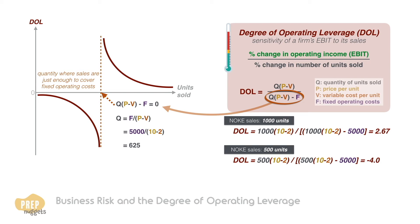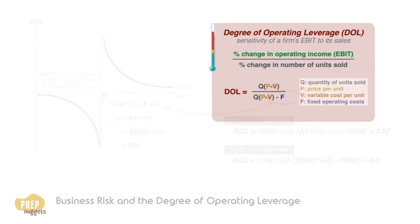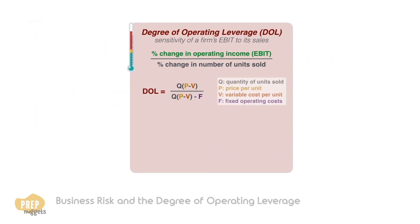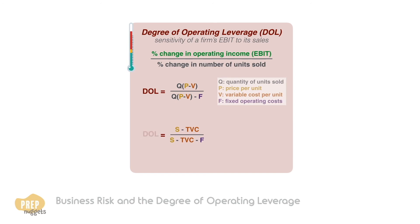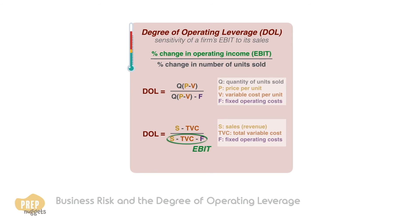Just one last thing to note for degree of operating leverage. If we multiply in the number of units, the formula can be expressed in a different form, where S is the sales or revenue and TVC is the total variable costs. Note that in this form, the denominator is operating earnings or EBIT.